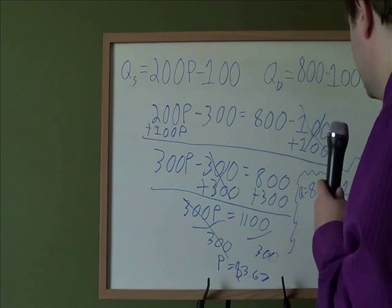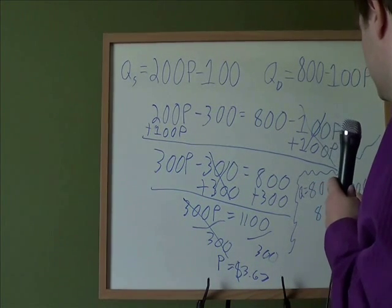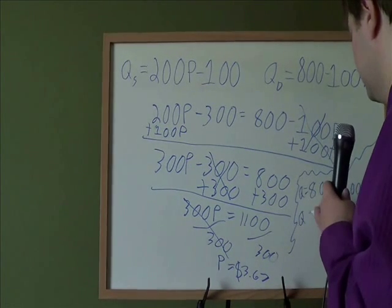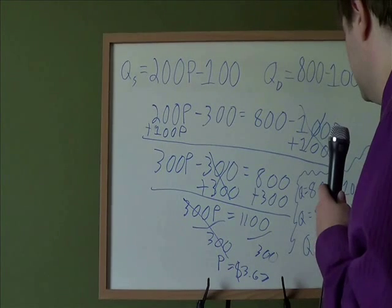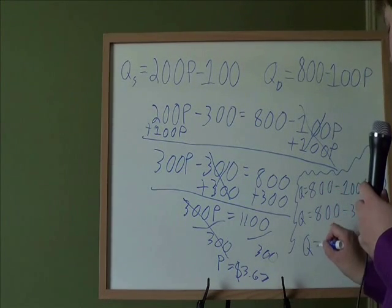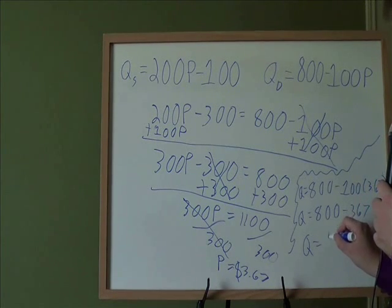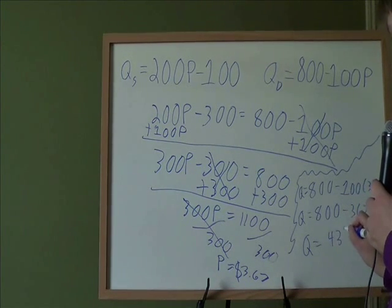So, 100 times 3.67, that is 367. 800 minus 367. This is where a calculator would be nice, but that ends up being 433.